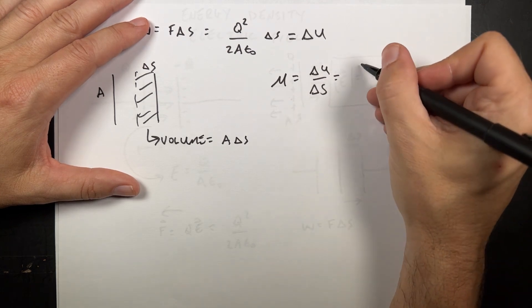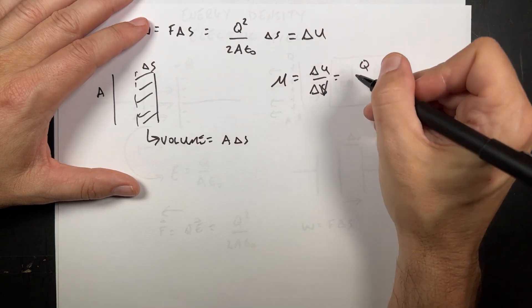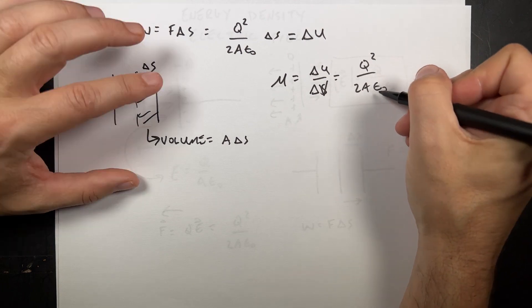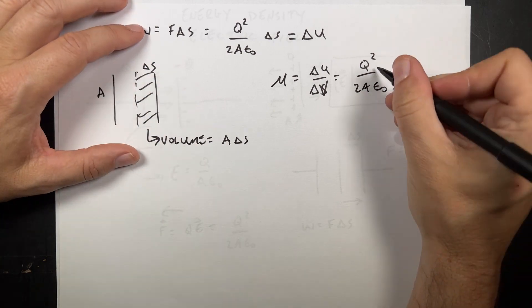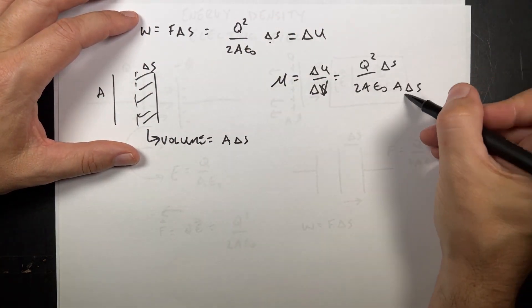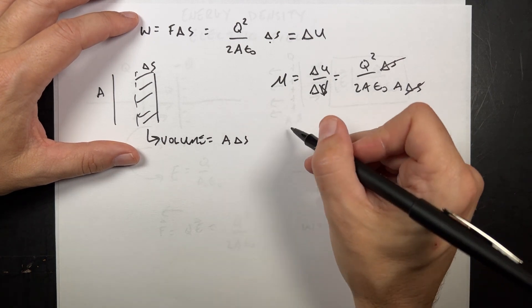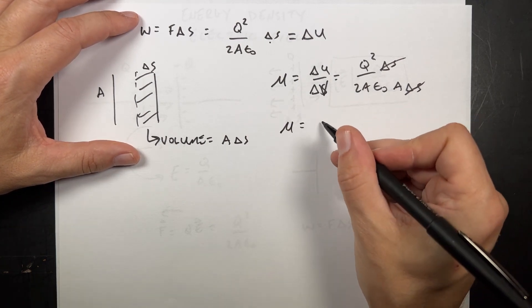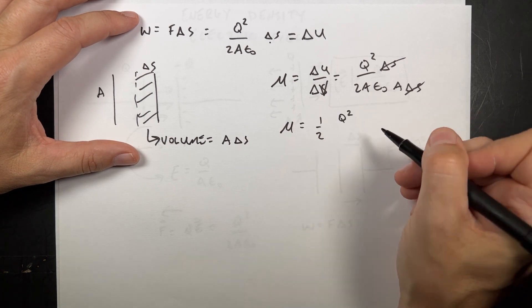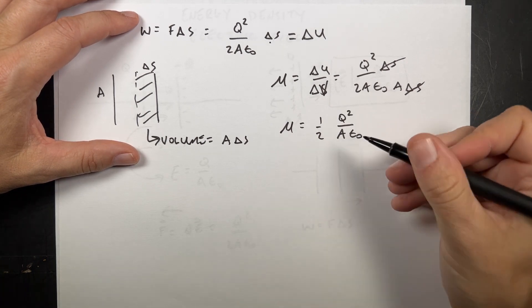So that's going to be equal to Q squared over 2A epsilon naught, and then I have A delta S. And there was a delta S up there. Why did that drop? Oh, that's right there. So that cancels. And I can write this as mu equals one half Q squared over A epsilon naught.